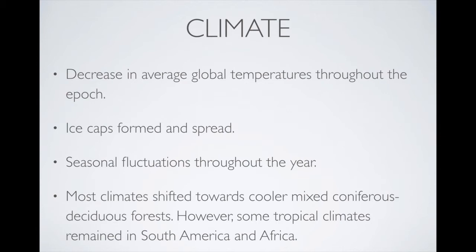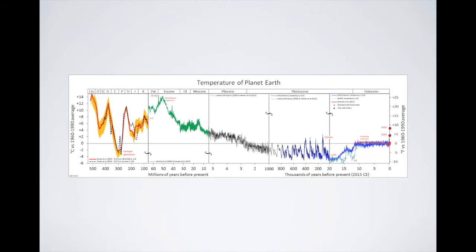This lowered sea levels. The Isthmus of Panama formed as a result, which I will discuss later in the life section of this presentation. The most notable thing about the climate during this time was the shift to cooler, more arid, grassland and forest ecosystems instead of the tropical ones that covered the Earth before. The temperature graph shows this general trend of decline continued through the Oligocene Epoch, which sits between the Eocene and the Miocene on the graph.